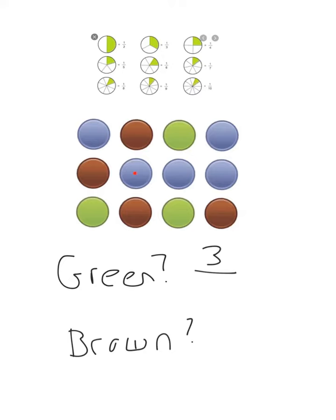There are one, two, three, four, five, six, seven, eight, nine, ten, eleven, twelve in the whole. So three out of twelve, or three twelfths of this set is green. Obviously, four twelfths of the set is brown.